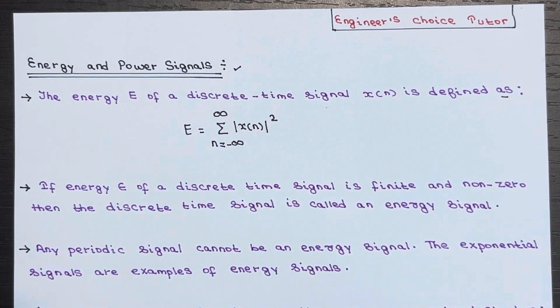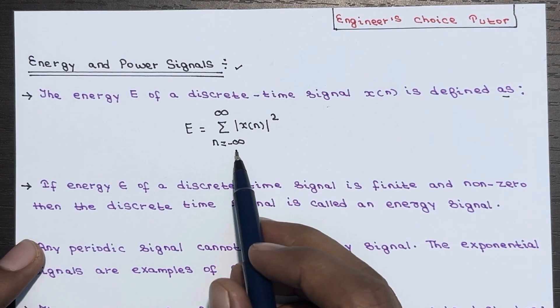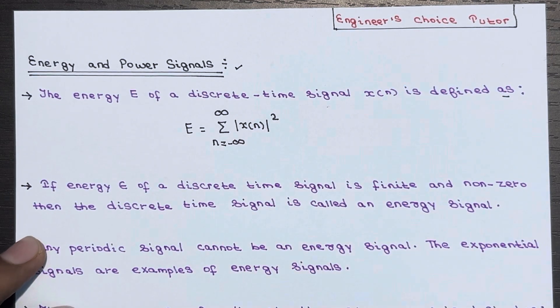So it is defined as the summation of the absolute square of x(n) over the limit n ranging from n equals minus infinity to plus infinity.